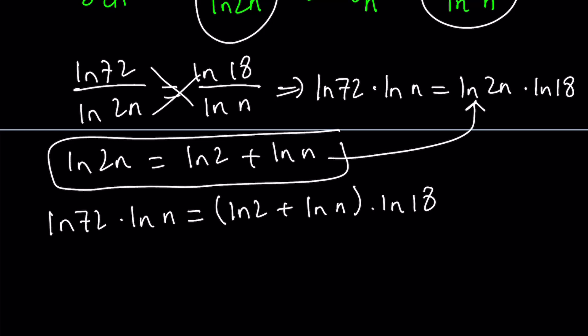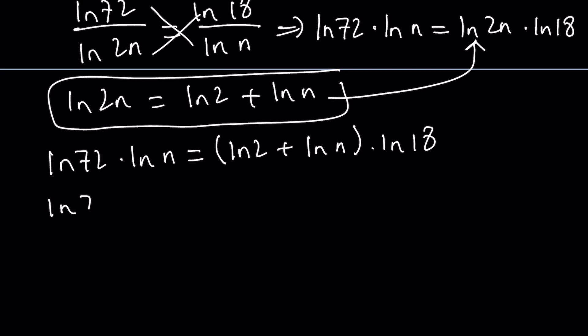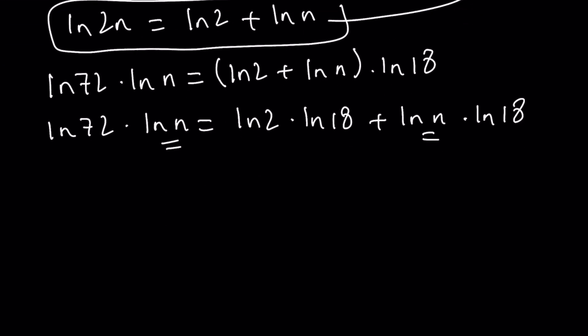We can distribute the expression on the right-hand side. ln 72 times ln n equals ln 2 times ln 18 plus ln n times ln 18. Now we have ln n on both sides. Let's put them together and factor out. We're going to take out ln n and ln 72 minus ln 18. That equals ln 2 times ln 18.